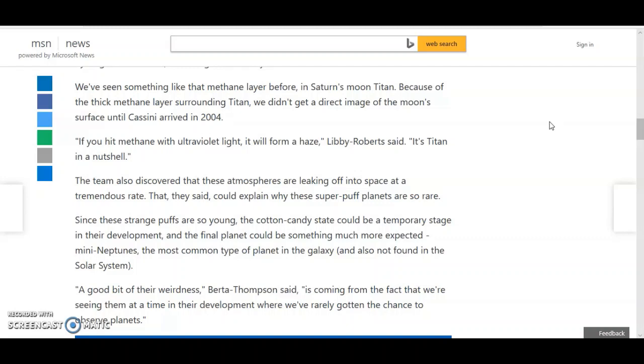Since these strange puffs are so young, the cotton candy stage could be a temporary stage in their development, and their final planet could be something much more expected - mini Neptunes, the most common type of planet in the galaxy, and also not found in the solar system. A good bit of their weirdness, Berta-Thompson said, is coming from the fact that we are seeing them at a time in their development where we rarely got the chance to observe planets.